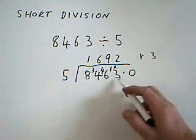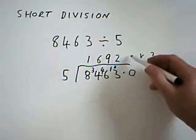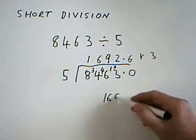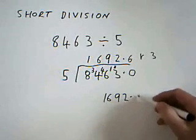Or you can extend it into the decimal area. 5 into 30 now. That goes exactly 6 times. The answer is 1692.6.